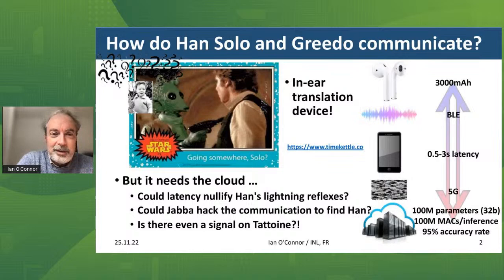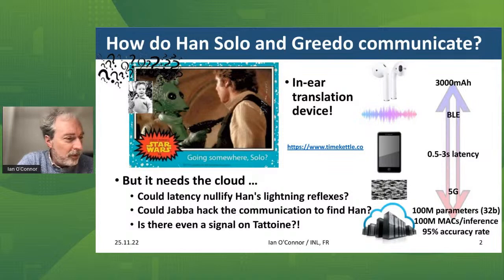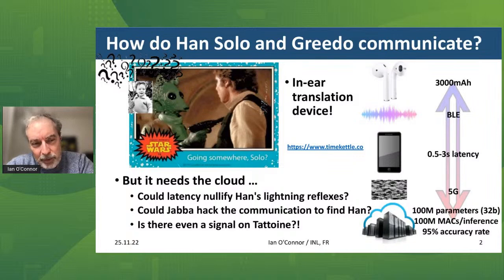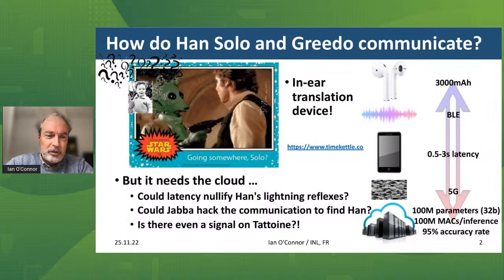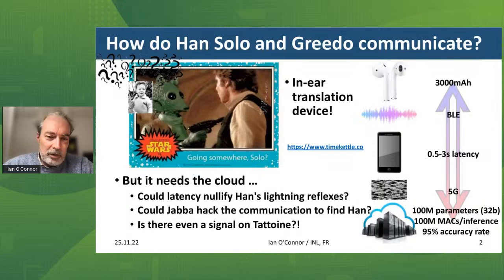I'd like to start with a motivational slide about edge intelligence. I'm a big Star Wars fan and I like to situate what we're trying to do in the context of a problem that revealed itself during the very first Star Wars film, Episode 4. There's a scene at the beginning where Han Solo meets an alien called Greedo in a cantina. The exchange happens with Han Solo talking in English and Greedo speaking in an alien language which is subtitled, but Han Solo can completely understand it directly.